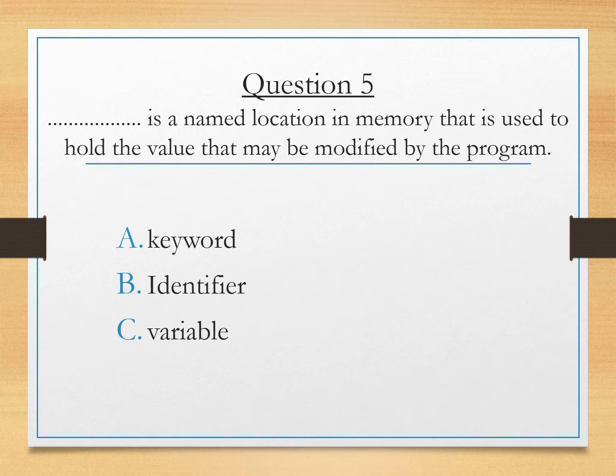Question number 5. Dash is a named location in memory that is used to hold the value that may be modified by the program. Now keyword, identifier or variable. We know that keyword is something which is system defined. Right? It is used in the language. Identifier is also a name of a variable. And variable is also something which is the named memory location. So answer is C. Variable.